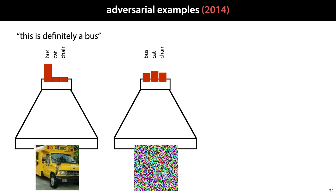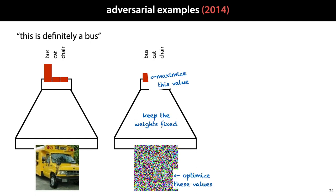This is easy to do. You just compute the gradient with respect to the input of the network, and train the input to maximize the activation of a particular label. So in this case, we take the activation of the node corresponding to the class bus as the value that we want to maximize, we keep the weights of the network fixed, and we optimize the input.